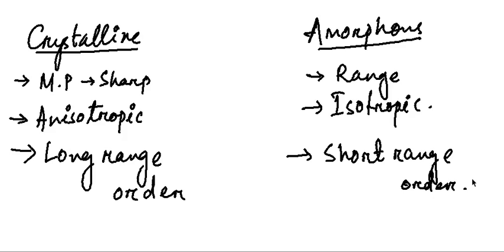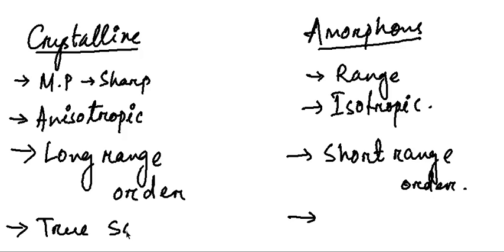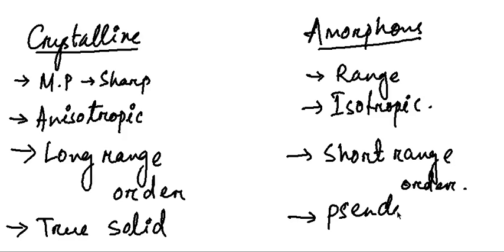Amorphous substances are also called pseudosolids or supercooled liquids because they behave like solids but do not possess all the characteristics of a solid. Pseudo means false. Crystalline substances, on the other hand, are called true solids because they follow all the characteristics of a solid.